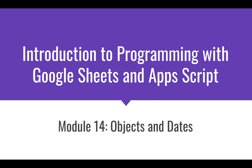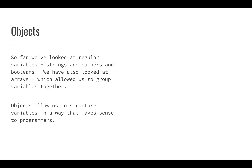So far we've looked at lots of different kinds of variables — strings, numbers, booleans, and arrays. Arrays were a little bit limited in that they could give us multiple values and multiple elements, but each one was just numbered so we couldn't really identify what was what. Regular variables and arrays let us group data together, but objects give us a little bit more capability.